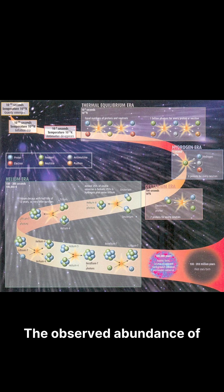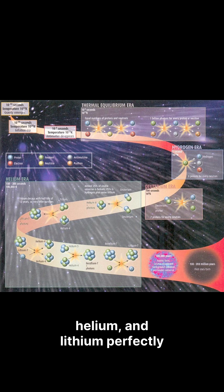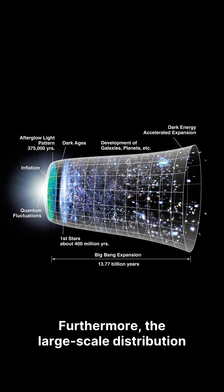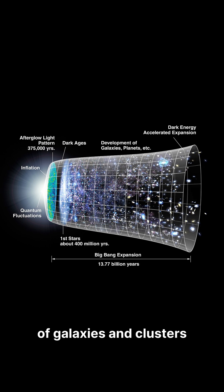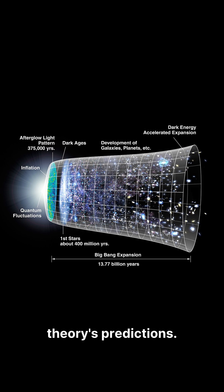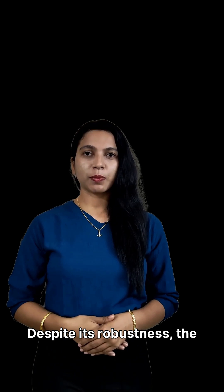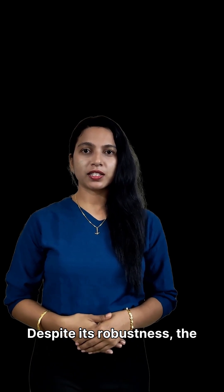The observed abundance of light elements like hydrogen, helium, and lithium perfectly matches the predictions of Big Bang nucleosynthesis. Furthermore, the large-scale distribution of galaxies and clusters aligns precisely with the theory's predictions.